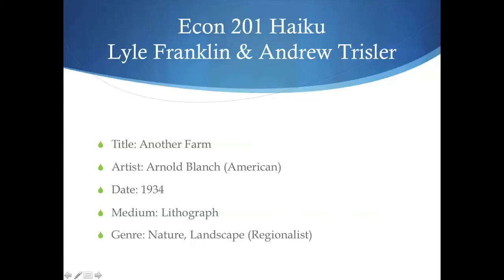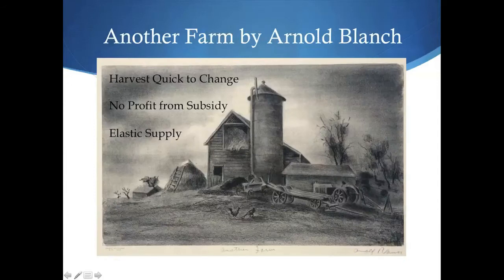Here's an example of a truly outstanding project. The artist is Arthur Blanche, an American — another farm scene, a lithograph from 1934. If you look at the picture you see a decrepit barn and a farm that's fallen on hard times. Here's the student's haiku: Harvest quick to change, no profit from subsidy, elastic supply. What, you might say? Until you remember the principles of incidence with subsidies and taxes.